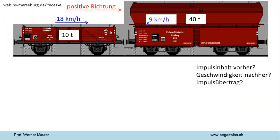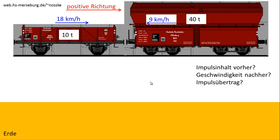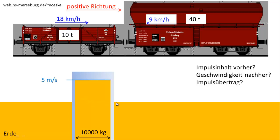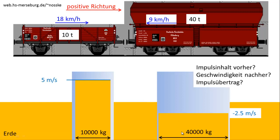Jetzt noch ein Beispiel als Hausaufgabe: Die beiden Güterwagen – der eine ist ein bisschen langsamer, aber der andere fährt entsprechend entgegen. Wir übersetzen das ins Flüssigkeitsbild. Der leichte Wagen hat einen Querschnitt von 10.000 kg und eine Füllhöhe von 5 m/s. Der zweite Wagen hat 40.000 kg Querschnitt und eine Füllhöhe von minus 2,5 m/s. Wie viel Impuls speichern die Wagen vor dem Stoß? Was ist die Geschwindigkeit, wenn die Puffer voll eingefahren sind? Und wie viel Impuls wird übertragen? Ich bin mir sicher, Sie können das alles problemlos beantworten.